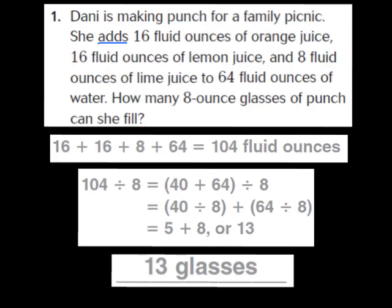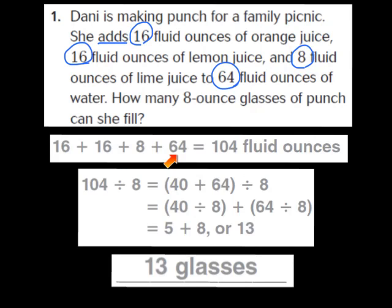I noticed that she adds 16 fluid ounces of orange juice, 16 fluid ounces of lemon juice, and 8 fluid ounces of lime juice to 64 fluid ounces of water. So what I know I need to do first is add those numbers together — 16 fluid ounces of orange juice, 16 fluid ounces of lemon juice, 8 fluid ounces of lime juice, and 64 fluid ounces of water — which gives me 104 fluid ounces.